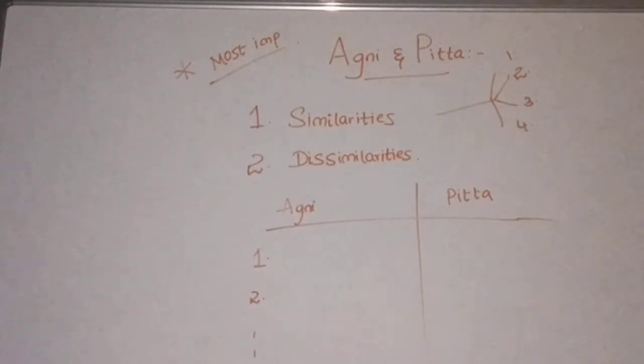Next, coming to similarities. Agni and pitta. Here, agni is considered as tejas. Pitta is also considered as tejas. Agni functions as dahana karma. Pitta also consists of daha karma. Next, agni causes pachana. Pitta causes paka. Agni causes ushna. Pitta also causes ushma. So, these were the similar qualities. What are they? Tejas, dahana, pachana. And final one is ushma.